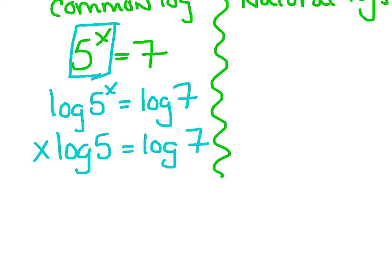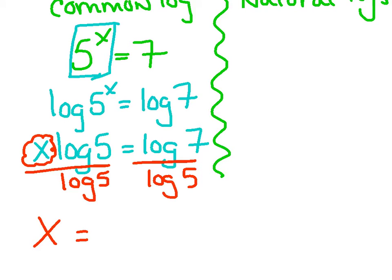Just another step or two to go here. If I read this out loud, it says x times log 5. So in order for me to get x by itself, I'm just going to divide both sides by log 5. Now, by no means is this something you should be able to do in your head. You should go straight to your calculator at this point and type this in. When you type in log 7 divided by log 5, I get 1.209.